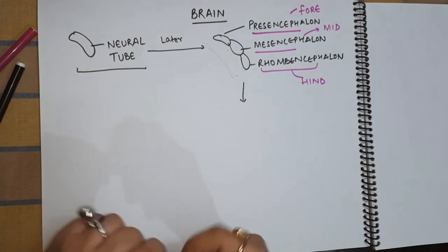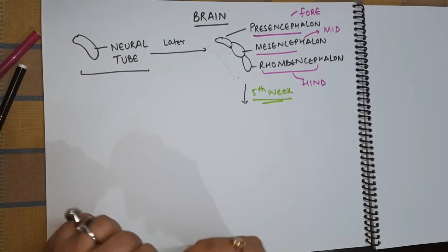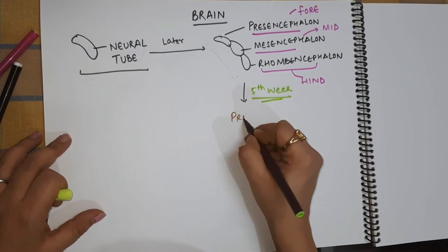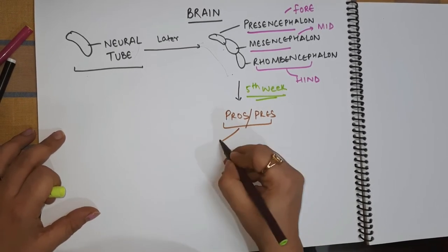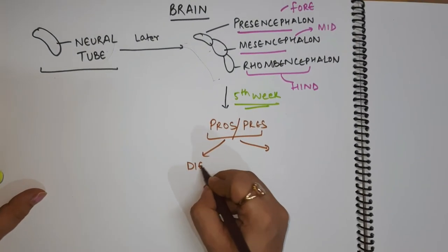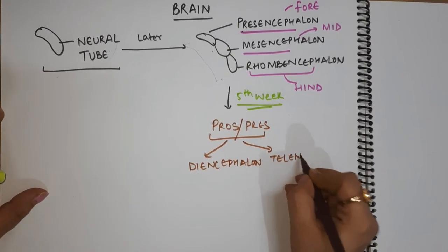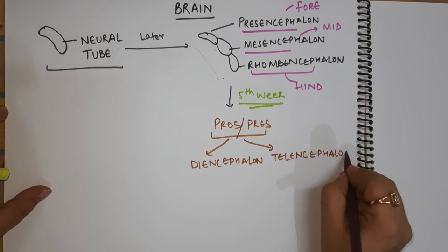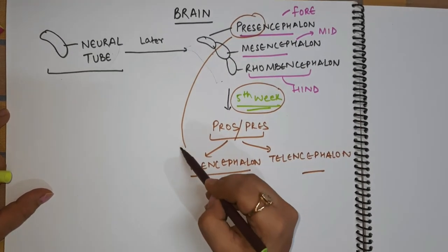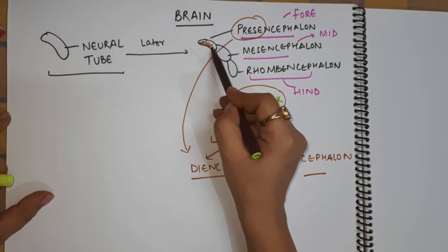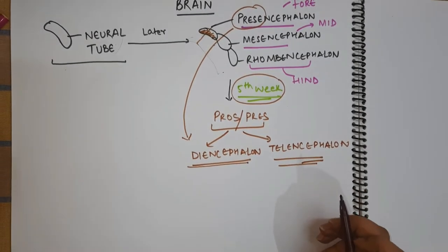So what happens at the fifth week of the embryo? After the embryo is five weeks old, the brain again further starts to grow and develop. The prosencephalon further classifies or differentiates into something called diencephalon and telencephalon — structures we learn about in the complex human brain. So this prosencephalon, after the five-week embryonic stage, differentiates into two parts: diencephalon and telencephalon.